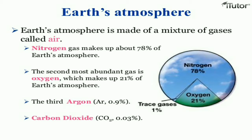The second most abundant gas is oxygen, which makes up 21% of Earth's atmosphere. Argon is 0.9% and carbon dioxide is 0.3%. Earth's atmosphere is made of a mixture of gases and it's called air. You all understand that Earth's atmosphere is covered with air.